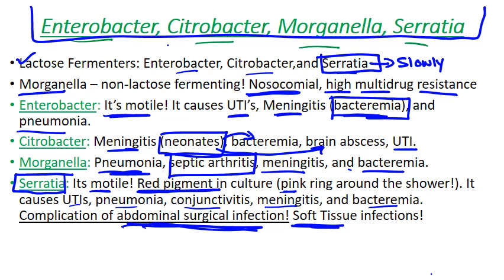Serratia can also cause soft tissue infections, and these can lead to necrotizing fasciitis — essentially a flesh-eating infection that destroys tissue. So it can cause some really serious clinical syndromes: meningitis, bacteremia, necrotizing fasciitis — all really unpleasant. You want to keep an eye out for these and make sure you're aware of what the infectious disease group in your practice recommends for treatment, because they can be difficult to manage.